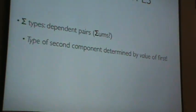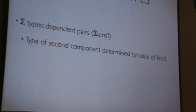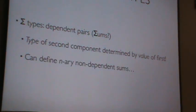But they look more like pairs to most people. They have two components. It's like a Haskell pair, except the type of the second component is determined by the value of the first. It's an interesting dependency.